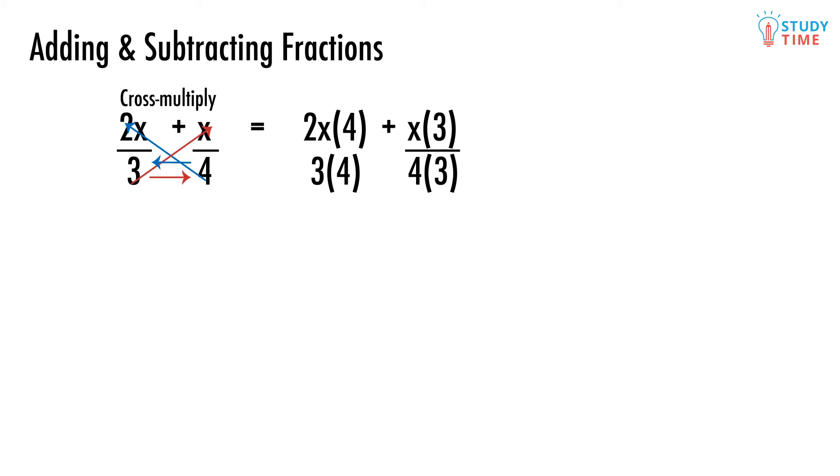Now things look more complicated. Stay calm, it's only an illusion. Both fractions now have the same denominator. 3 times 4 equals 12. We can tidy up those numerators as well. 2x times 4 is 8x and x times 3 is 3x.